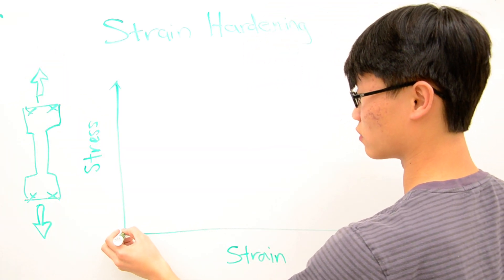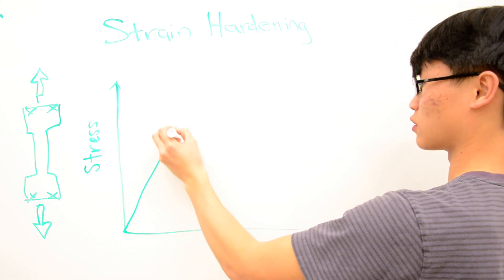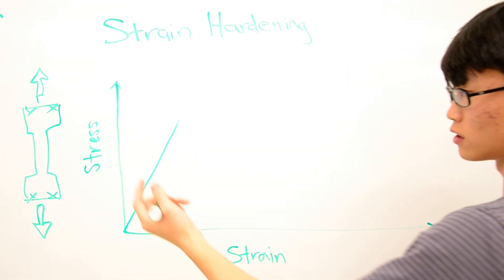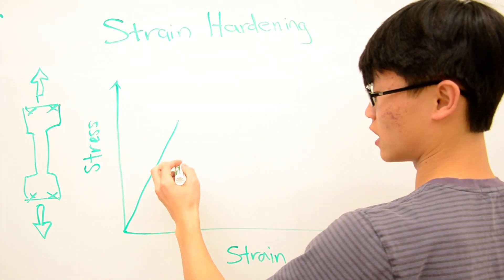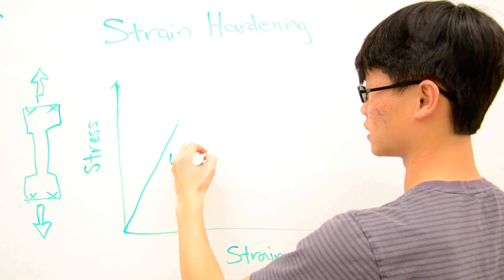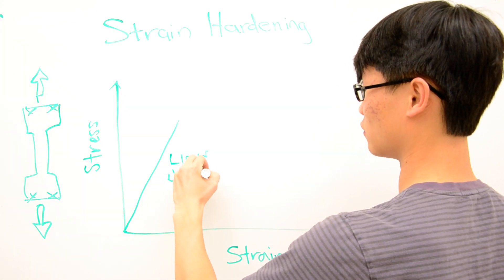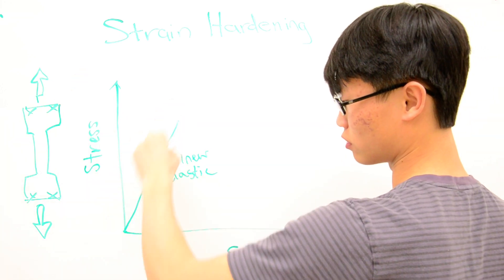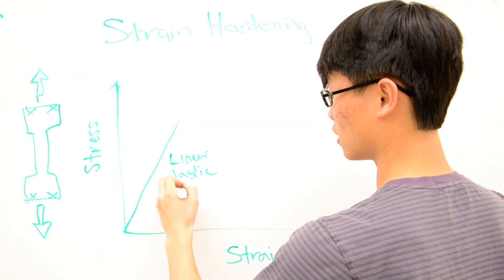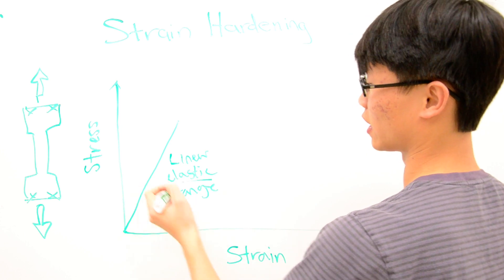We saw in a previous video that for a while it was a straight line, which meant that for every increment of force you added to the specimen, it would elongate a proportional amount. We called this the linear elastic range, which meant that if at any point in this straight line you stopped pulling the material, it would return right back to the original length, thus the elastic work.